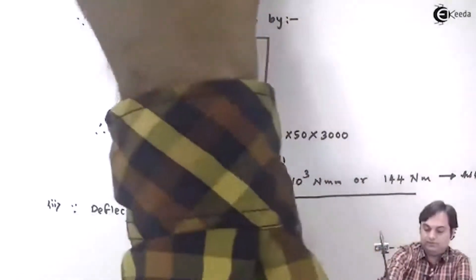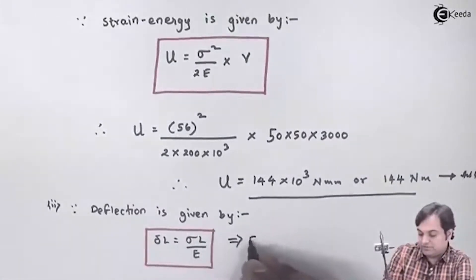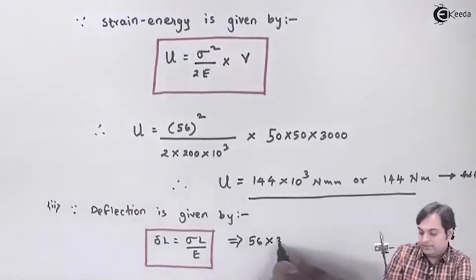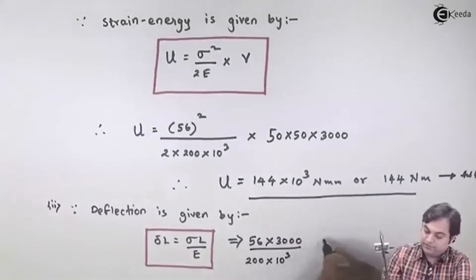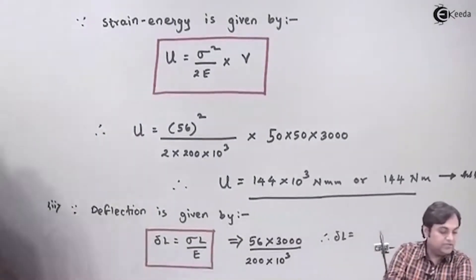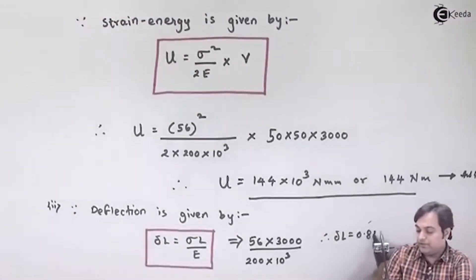So therefore deflection will be equal to, stress is 56, length is 3000, capital E is 200 × 10³. So from this I can say that the deflection is equal to the answer which I have calculated, it is 0.84 mm.